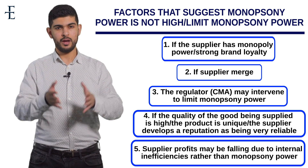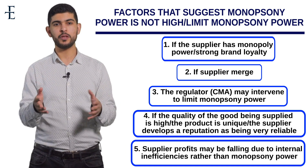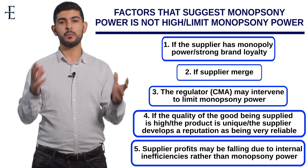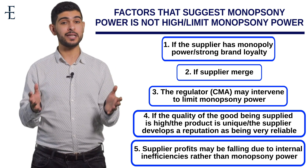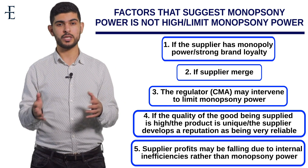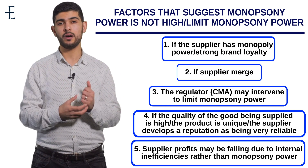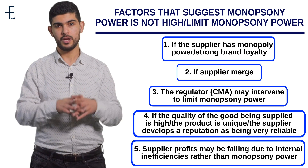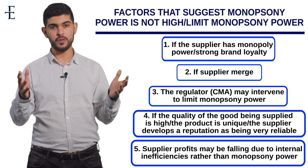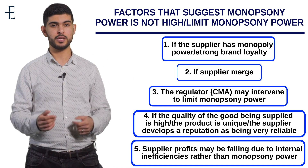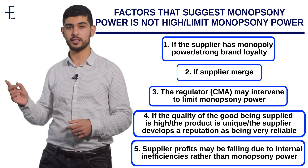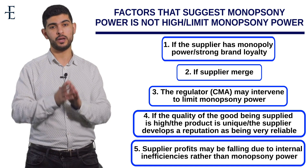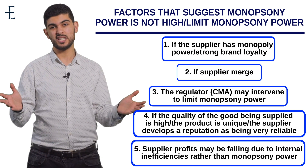It's highly recommended to look at the June 2012 9c exam question about monopsony power in the supermarket industry with a firm called Northern Foods. Check the mark scheme and you'll see that we have hit pretty much every single point.